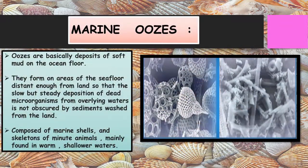Marine ooze: fine soil particles are deposited on a large scale, and the remains of marine plants and animals are mixed in these deposits. This mixture made up of fine particles — around 30% of the deposits — is called marine ooze. Ooze is basically deposits of soft mud on the ocean floor, formed in areas of the seafloor mainly containing dead microorganisms, marine shells, and skeletons of minute animals. They are mainly found in warm and shallow waters.